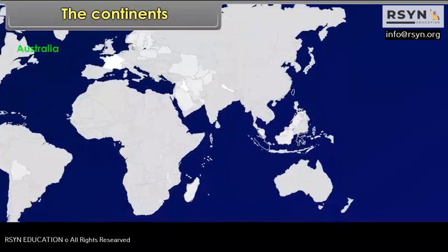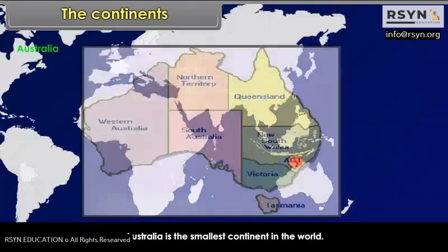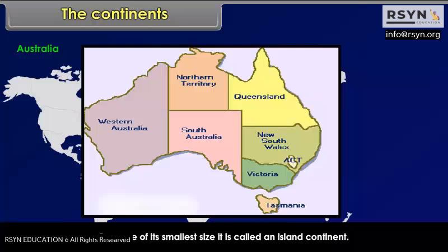Australia is the smallest continent in the world. It lies entirely in the southern hemisphere. It is surrounded on all sides by oceans and seas. Because of its smallest size, it is called an island continent.